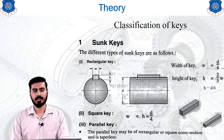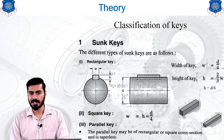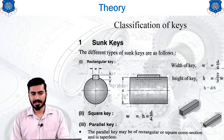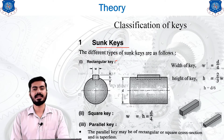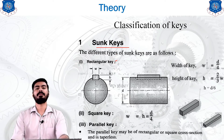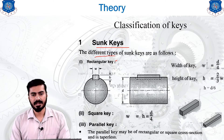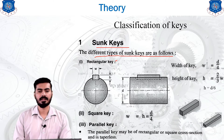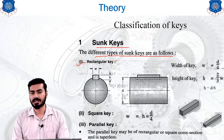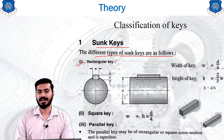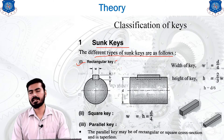The classification starts with the first type: the sunk key. The sunk key itself has different subtypes. The first subtype of the sunk key is the rectangular key, where the cross section of the key is of rectangular shape.